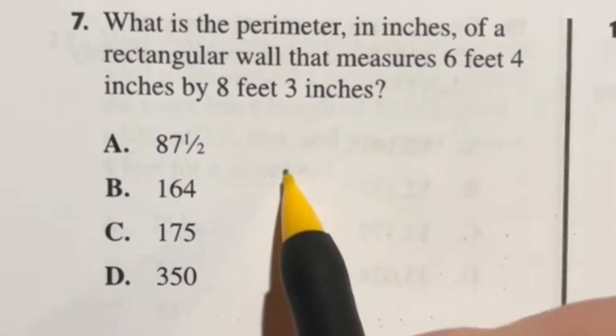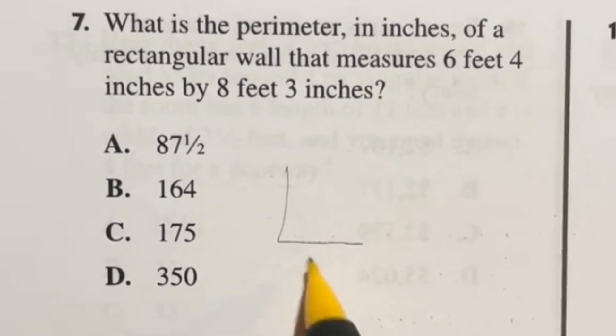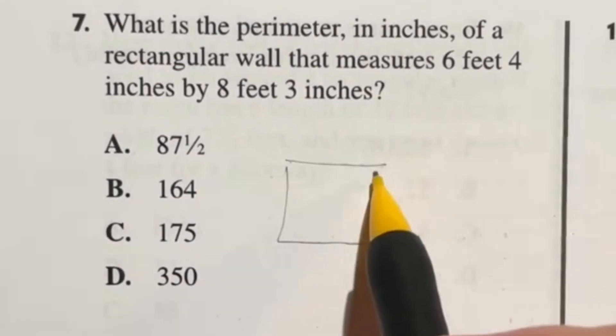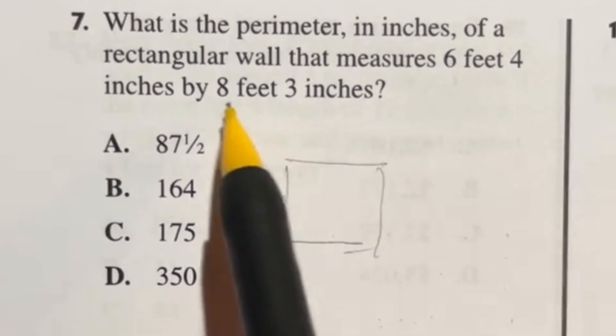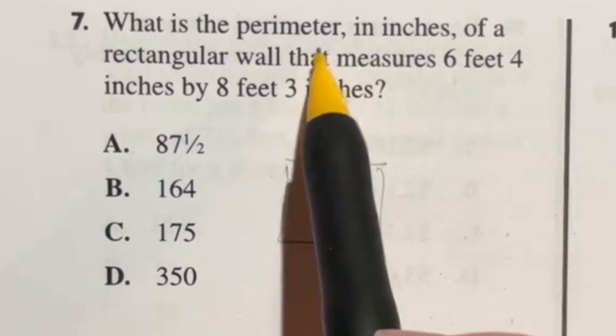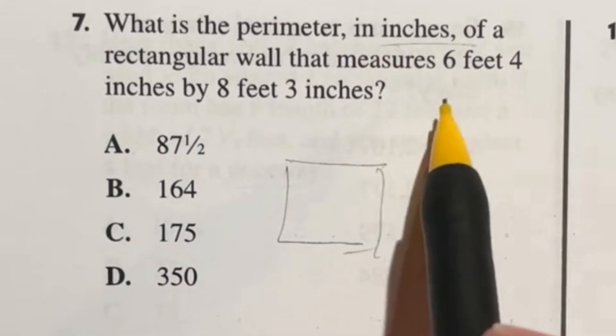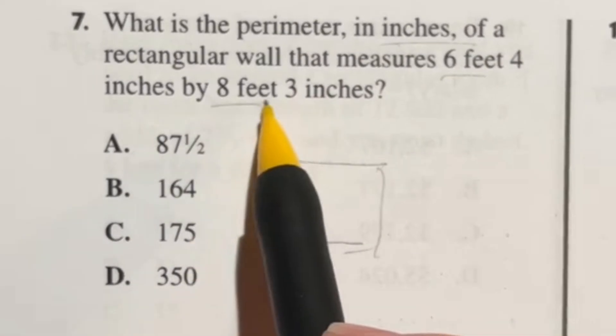First, we're doing perimeter, meaning that when we get the length and width here, we're going to need to multiply by two to get the other side because you're adding up all four sides. Now when we're doing this, it wants the answers in all inches. So let's convert these feet to inches first.